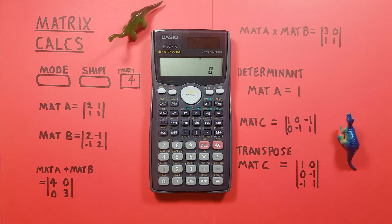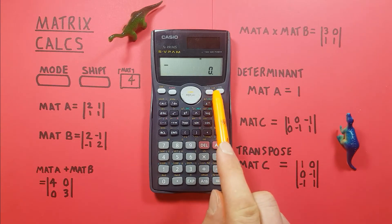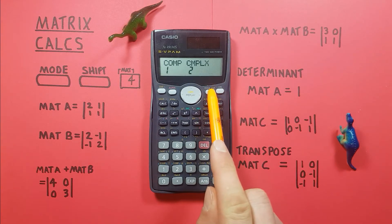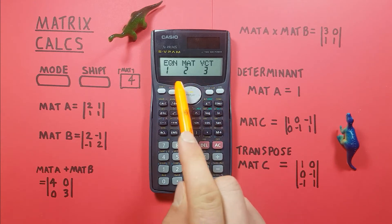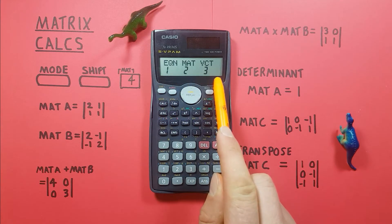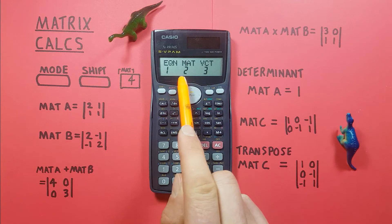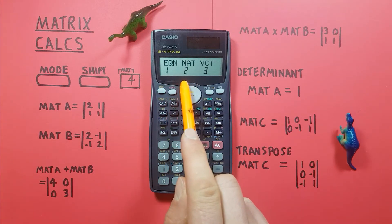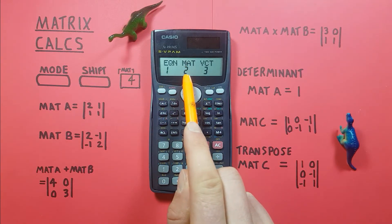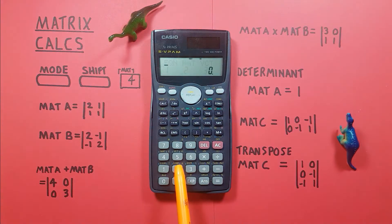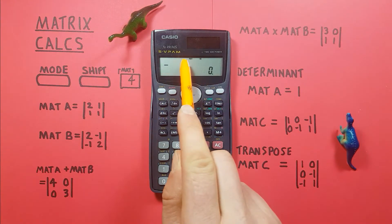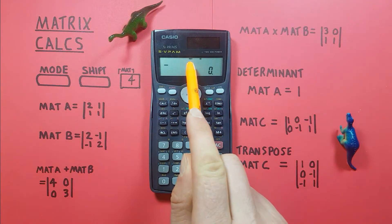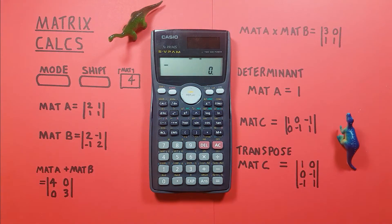The first thing you're going to want to do when working with matrices is put your calculator into matrix mode. To do that, find the mode key and press it three times until you see the mode menu. We want matrix mode which is mode number two, so press two. You should now see MAT on the top of your screen, which tells you you're in matrix mode.